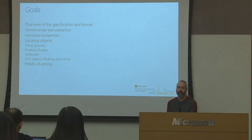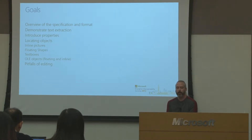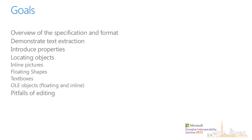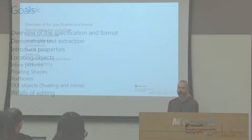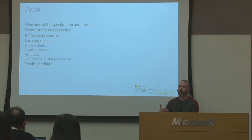We're going to start today with the talk on the Word binary file format. We'll do an overview of the specification and the format. Through the slides, we'll see how text is extracted, and you'll get a feel for how to do that. Then we're going to talk about properties, which are a very important part of the Word document format. We're also going to talk about locating various objects — things like pictures, shapes, text boxes, and OLE objects. And at the end, we'll have a brief discussion about pitfalls of editing — what happens when you edit the format directly without using Word or an application adept at parsing the Word format.